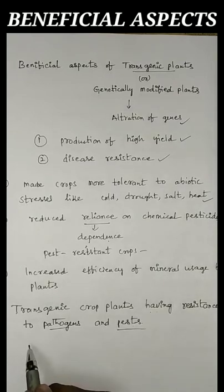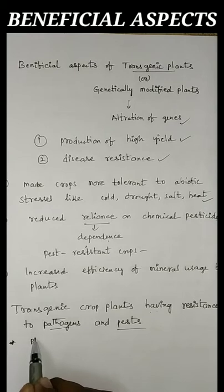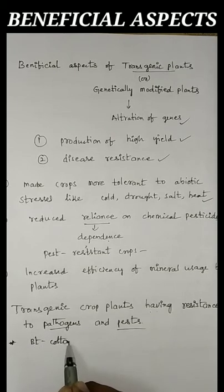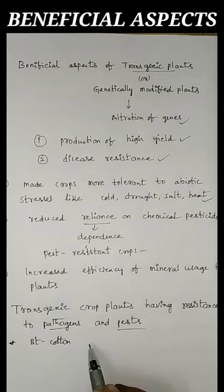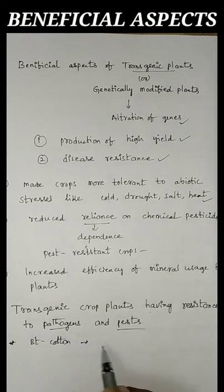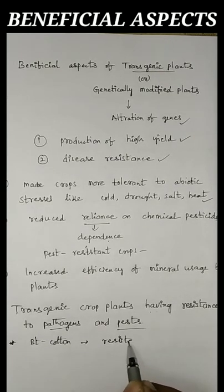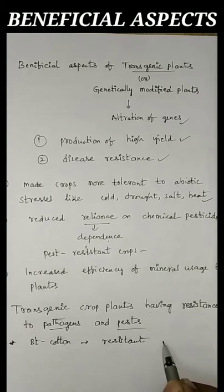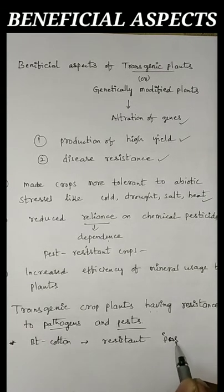We have some examples. One is BT cotton — one of the best examples for a pest resistant or insect resistant plant. BT cotton is resistant against insects.